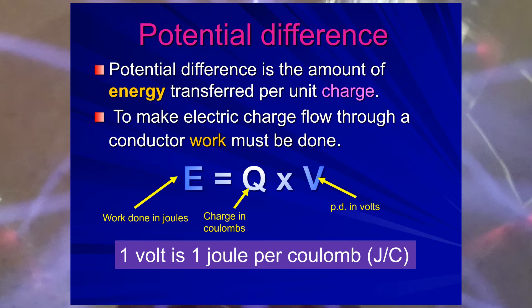Work must be done to make that charge move between two points. So, potential difference is the amount of energy transferred per unit charge. In other words, V equals work done divided by charge. That makes sense, doesn't it? It's the amount of joules per Coulomb.